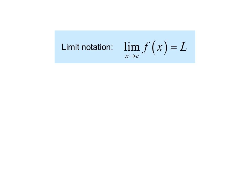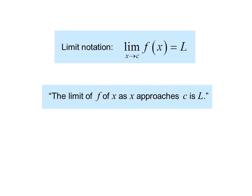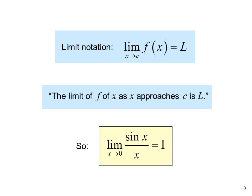Limit notation looks like this: the limit as x approaches c of f of x equals L, or 'the limit of f of x as x approaches c is L.' So in this case, the limit as x approaches zero of sine x over x equals one. Notice that we have not yet done an exact proof, but we are pretty confident in our answer.